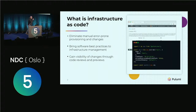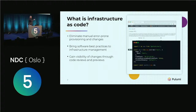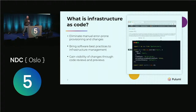Infrastructure as code allows you to bring software development best practices to your infrastructure management. We send pull requests, we get reviews, we lint our code, we format our code. Code gives us an audit trail and the ability to see what is going to happen. All of the tools these days — even ARM templates — have the ability to show you what they're going to do in advance. You can plan, preview, dry run to see what's going on. You don't want to YOLO anything into production because it will cause problems.